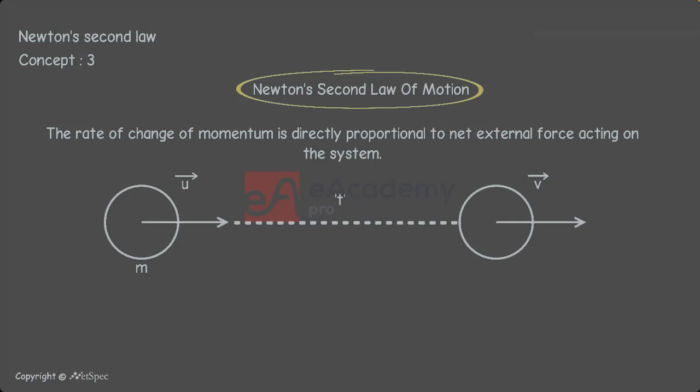Let us assume pi is called the initial momentum of the body which is equal to mu bar. That is, pi is equal to mu bar.